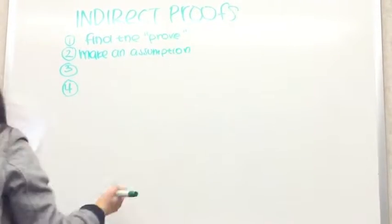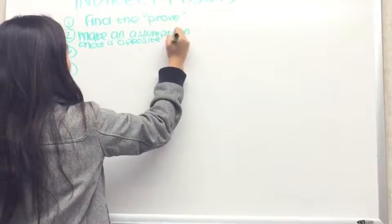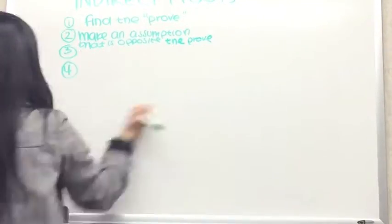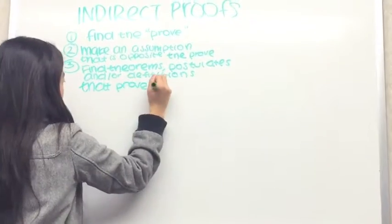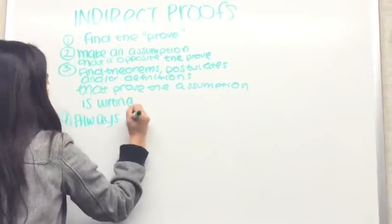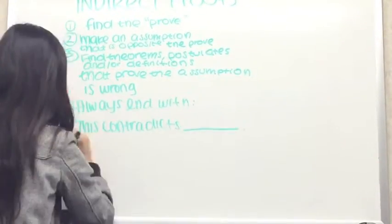First, find the proof. Second, make an assumption that is the opposite of the proof. Third, find theorems, postulates, or definitions that prove that the assumption is wrong. Always end with this phrase, this contradicts, insert theorem, postulate, or definition.